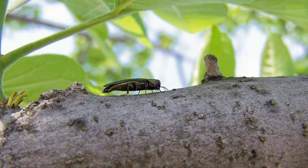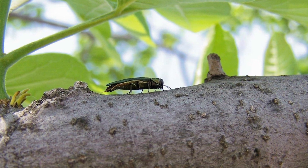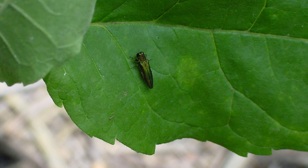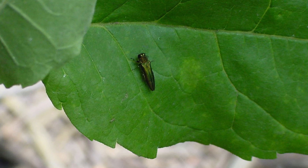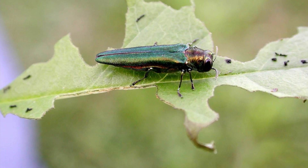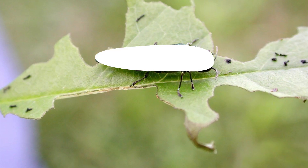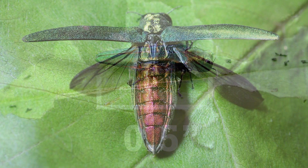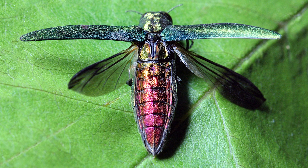On warm sunny days, late spring through summer, you may see adult emerald ash borers on the bark and leaves of ash trees. Their thin, oval-like bodies are about half an inch long, with a distinctive metallic green color and purple abdomen.